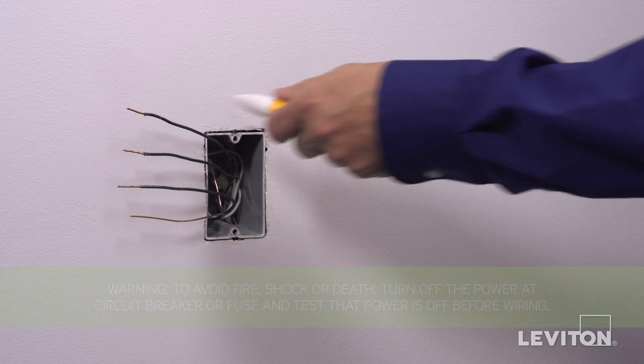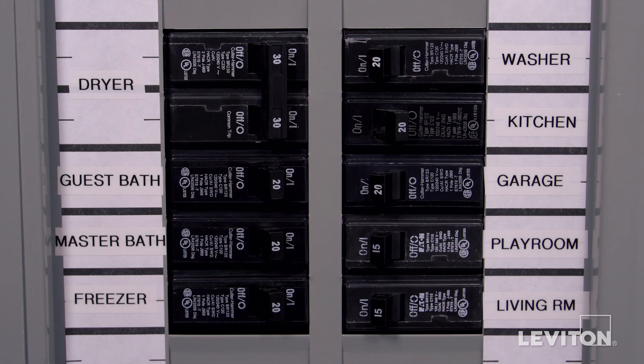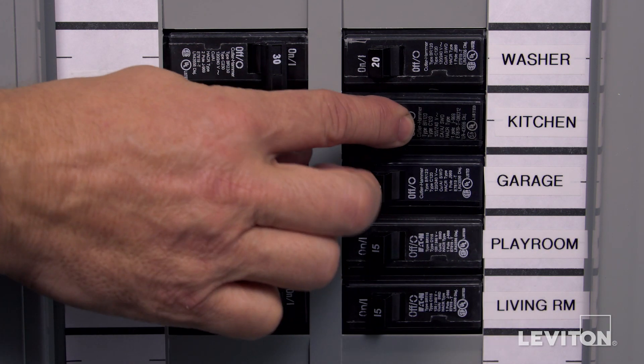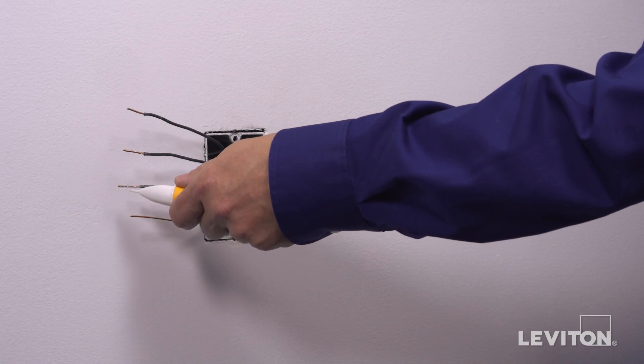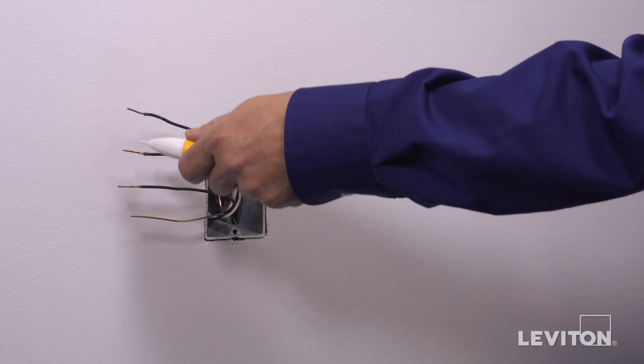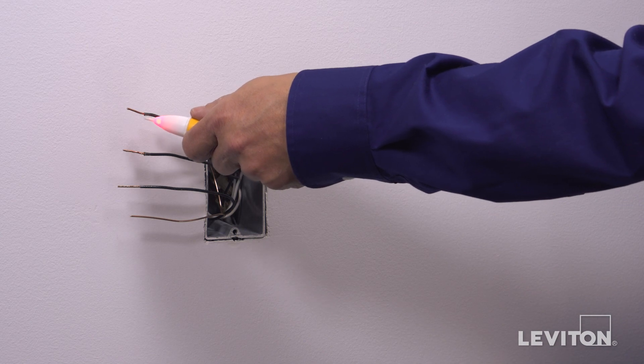Now, we need to identify the hot wire. To do this, turn the circuit breaker back on. Carefully use the voltage tester to test each wire. The hot wire will be indicated by the tester.